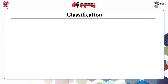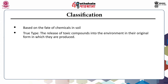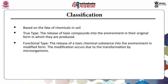Coming to the classification part — classification based on the fate of chemicals in the soil. The first type is the true type: the release of toxic compounds into the environment in their original form in which they are produced. The second one is the functional type: the release of toxic chemical substances into the environment in a modified form. This modification occurs due to transformation by microorganisms.